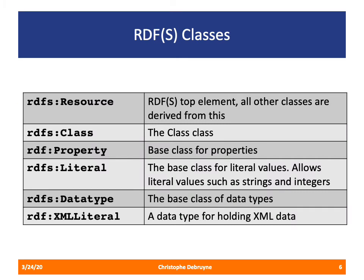We've seen that RDFS provides us with a type, RDFS class. The RDFS W3C recommendation provides a couple of types we can use to create vocabularies. RDFS resource is the top element — all other classes in RDFS are derived from it and everything is an instance of a resource. RDFS class, which we already used, is the base class of all classes. All classes we introduce in RDFS vocabularies are instances of RDFS class.